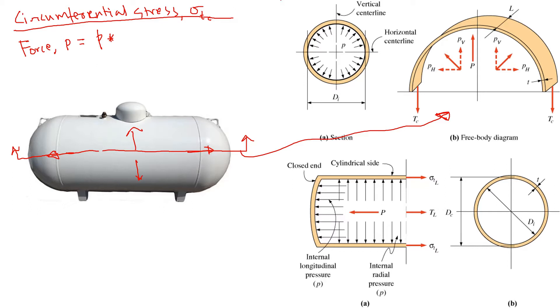The projected area, if we look at this direction or from the top, it's going to be a rectangle. It's going to be L, the length of the tank, times the diameter, internal diameter. That is the force due to the pressure inside the tank.